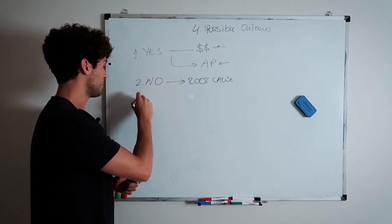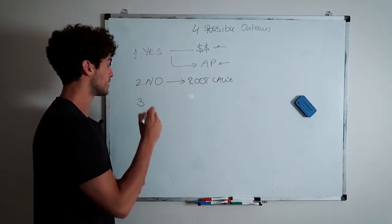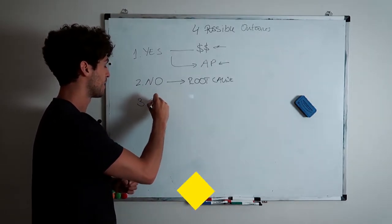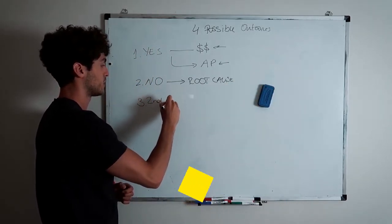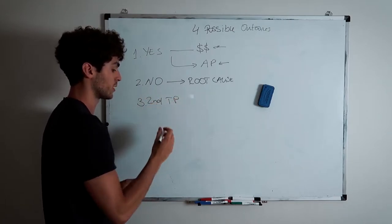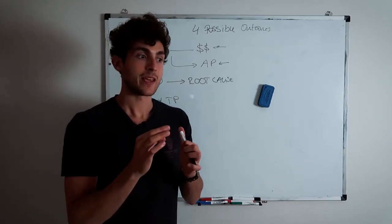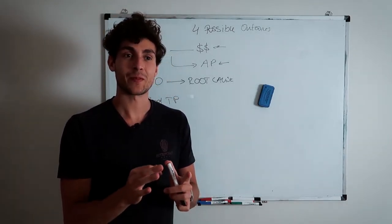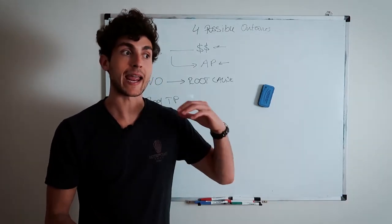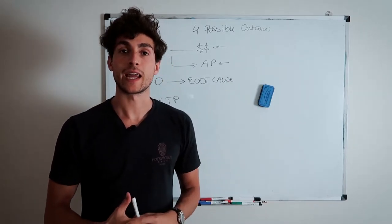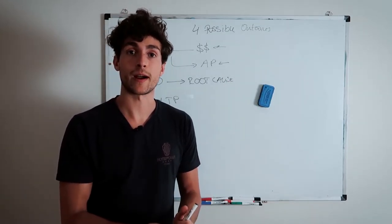Now, the third outcome is the second, let me call this the second touch point. Second touch point. I'll just call it second touch point. So what this means is that they generally say, right? They generally have to speak to someone about this. They have to get another decision maker involved in this decision for them to move forward, right?